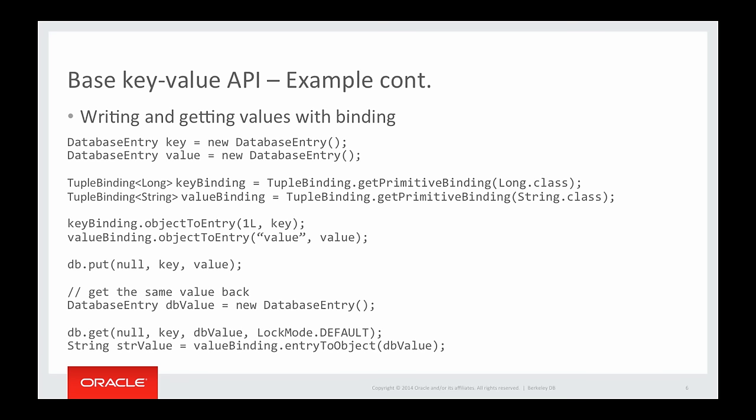To write and get values, you use database entries with tuple bindings. First, create database entries for the key and the value, and use tuple bindings to convert their values to database entries. Finally, use put() to write the key-value pair in the database. To get the value back, use get() with the corresponding key database entry. The value database entry will be populated with values returned from the database for the given key, and you can use a binding to convert the database entry back to your original value.